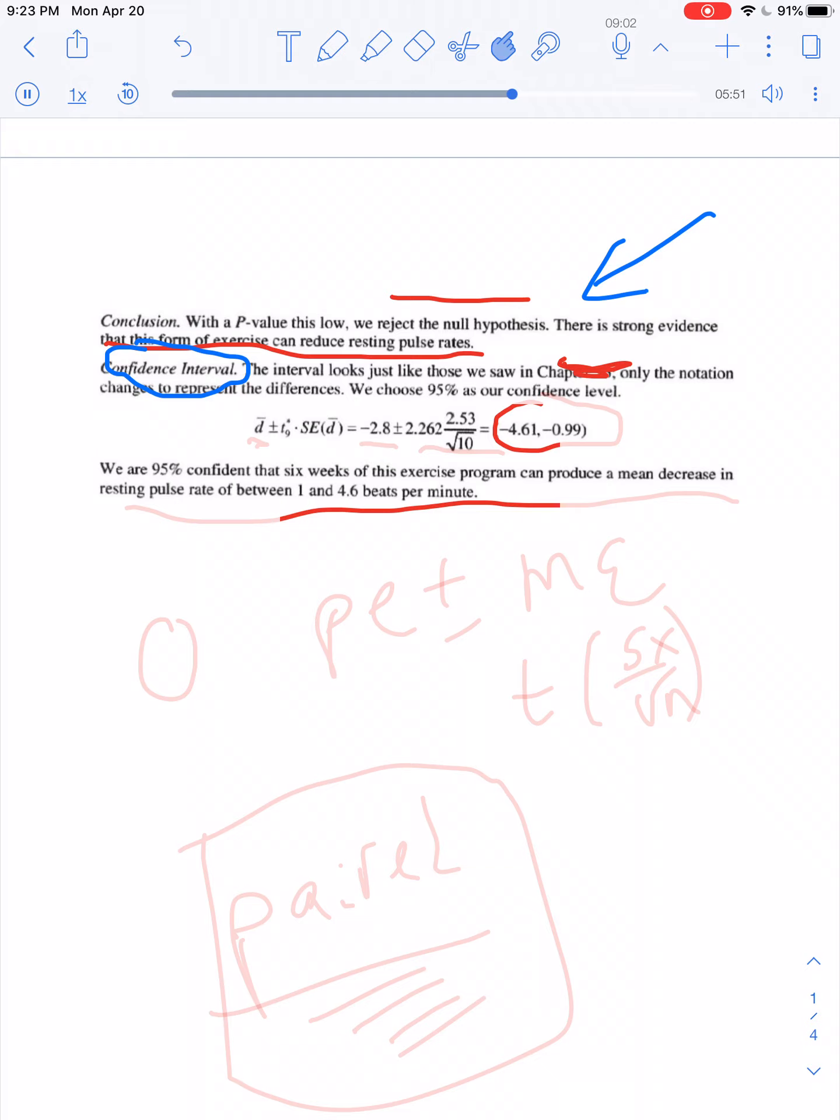You take your point estimate, which in this case would be μDIF, or D-bar they call it here. They call it D-bar. I call it μDIF. That's your point estimate, plus or minus your margin of error. So, in this case, your margin of error is going to be your t-score using 9 degrees of freedom times the standard deviation divided by the square root of n. So, what that works out to be up here is negative 2.8 plus or minus the t-value using 9 degrees of freedom. 95% confidence level would be 2.262. Then we have the standard deviation of 2.53 divided by the square root of 10. That gives us this confidence interval from negative 4.61 to negative 0.99.